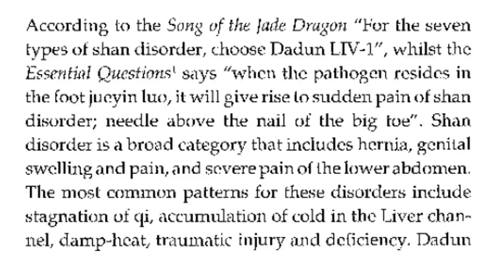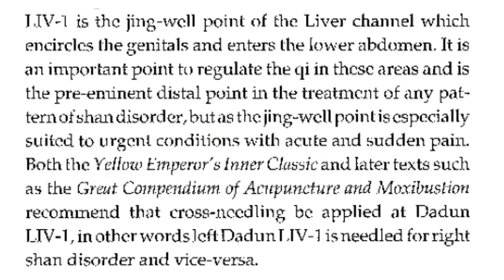According to the Song of the Dragon for the seven types of shan disorder, choose Liver 1, while the Essential Questions says when the pathogen resides in the foot, it will give rise to sudden pain of shan disorder. Needle above the nail of the big toe. Shan disorder is a broad category that includes hernia, genital swelling and pain, and severe pain of the lower abdomen. The most common patterns include stagnation of Qi, accumulation of cold in the lower channel, damp heat, traumatic injury, and deficiency.